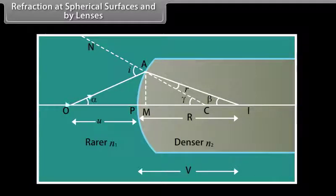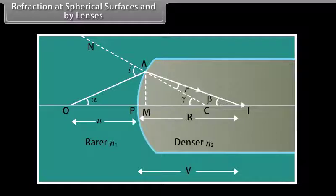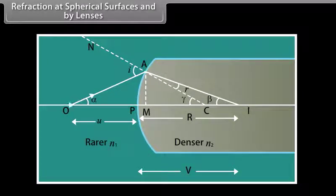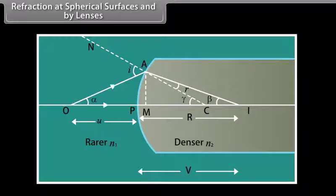Let O be a luminous point object on the principal axis of the convex refracting surface. An incident ray O-A, after refraction at point A on the surface, bends towards the normal N-A-C and goes along A-I. Another ray O-P falls normally on the surface and proceeds undeviated after refraction. The two refracted rays meet at I, which is the real image of point object O.